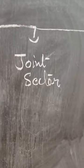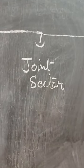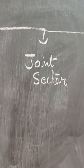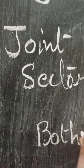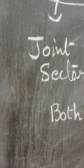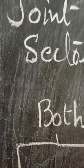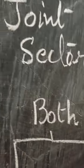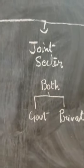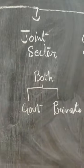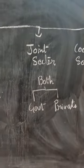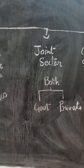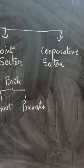Next is the joint sector. In this sector, the ownership of the industry is in the hands of both the government as well as private ownership — both the government and private ownership handle it together. The example of such industries is the oil corporation, where ownership is handled by both the government sector and the private sector.